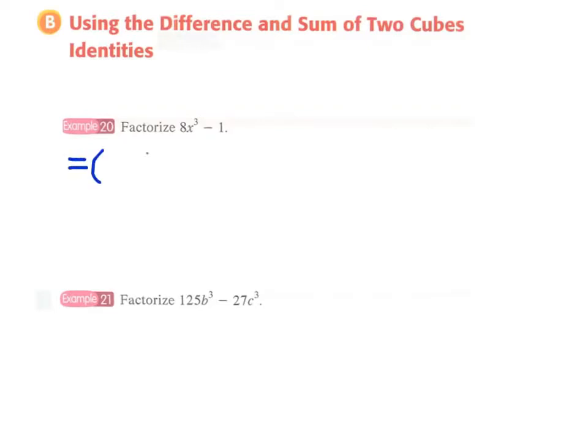we can write this as the cube of 2x minus the cube of 1, and therefore we have the form of a cube minus b cube, where a is 2x and b is 1.